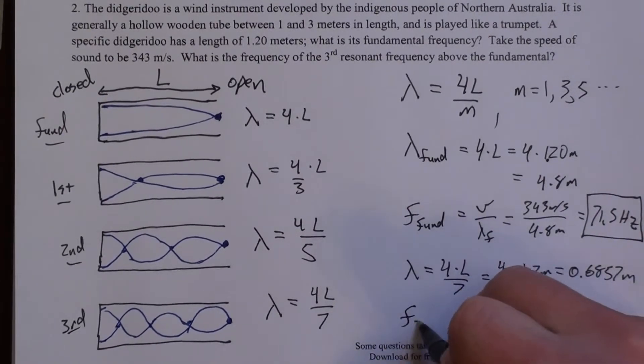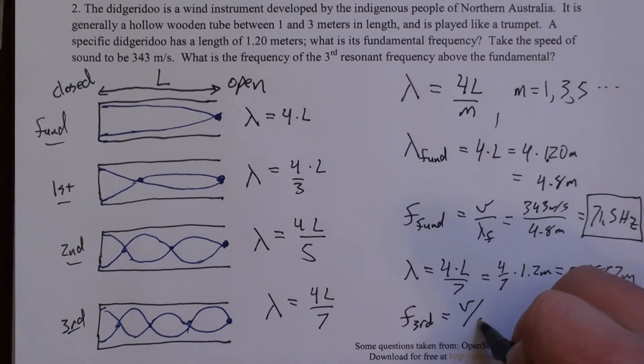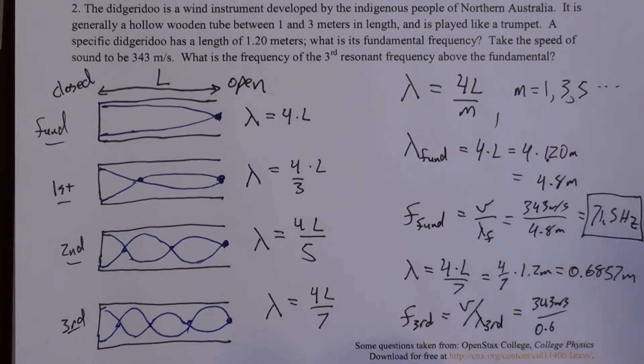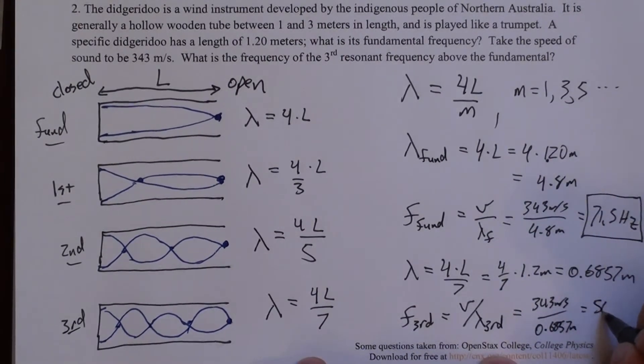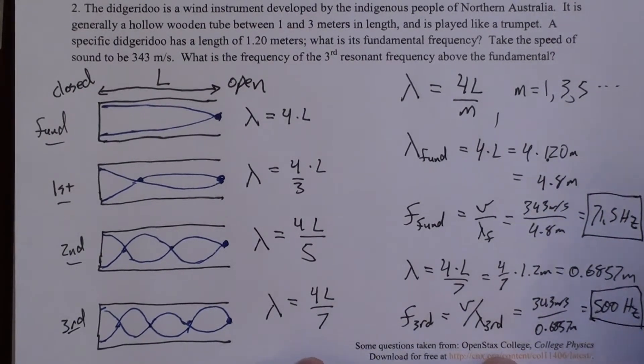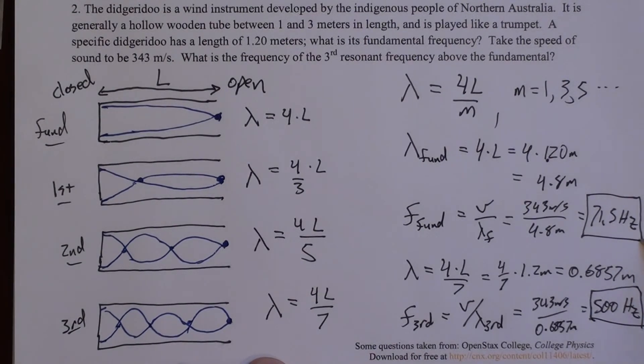And finally, the frequency, this is the third harmonic frequency. It's V divided by that lambda. So that's 343 meters per second divided by 0.6857. And what you get is very close to 500 hertz, which is closer to something you'd actually hear. So when you play a didgeridoo, because everyone has played a didgeridoo, right? You're generally not exciting the fundamental because that's pretty low and it's hard for people to hear. So you're generally exciting some of the higher frequencies.